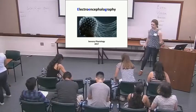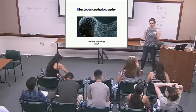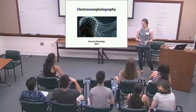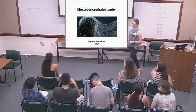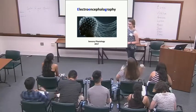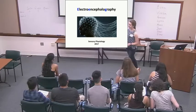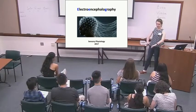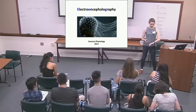Most of the time during this class we've been talking about peripheral sensory neurons. There's a difference between the peripheral nervous system and the central nervous system. The central nervous system is the brain and the spinal cord, and the peripheral nervous system is all the neurons that go out into your limbs and also to your sensory organs.